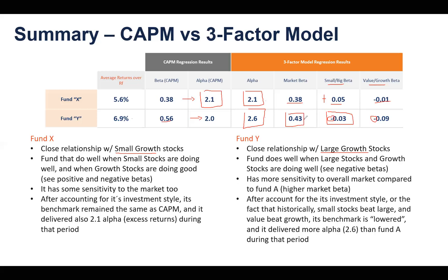Because of Fund Y's relationship with large and growth stocks — which have been shown to underperform small and value stocks — its benchmark is lowered, and therefore its alpha increases when looking at the three-factor model. When we account for investment style, we give it a break because it's investing in categories that have been shown to underperform others. Fund X does well when small and growth stocks do well; Fund Y does well when large and growth stocks perform well.